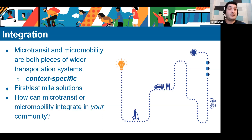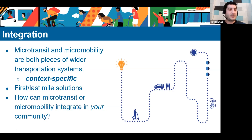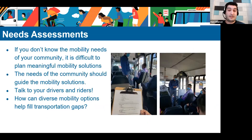Microtransit can also be a service in its own right, helping people access locations not reachable by fixed route services. The real question, understanding that these are very context-specific, is how microtransit or micromobility can integrate in your community. To understand that, you need to engage with your community and do a needs assessment. If you don't know the mobility needs of your community, it's really difficult to plan and implement meaningful mobility solutions.